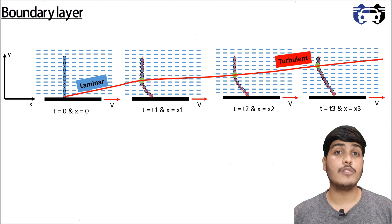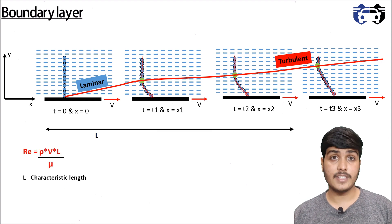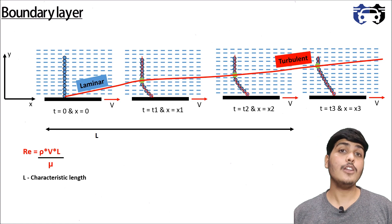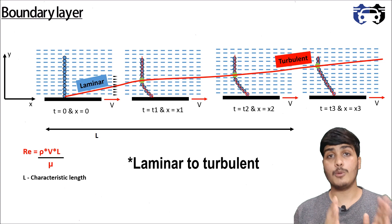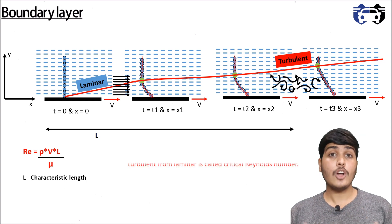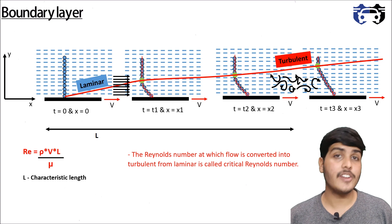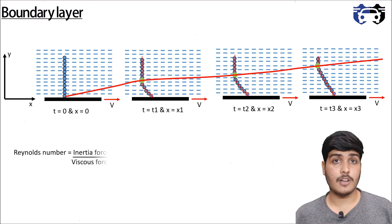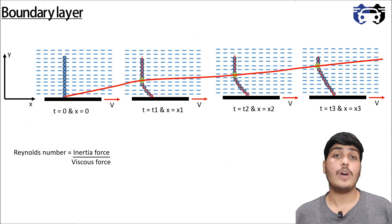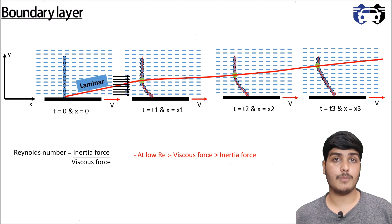The boundary layer can be laminar or turbulent. As you move forward in the x-direction, the characteristic length increases, meaning the Reynolds number increases, causing the flow to transition from laminar to turbulent. The Reynolds number value at which this transition occurs is called the critical Reynolds number. At low Reynolds numbers, viscous forces are dominant, which keeps the flow laminar at the start of the boundary layer.